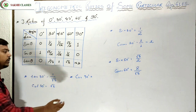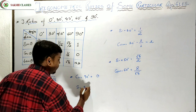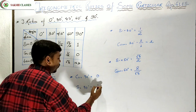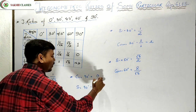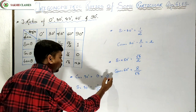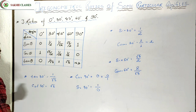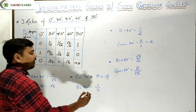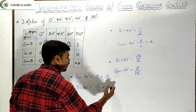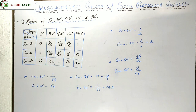For cosec 0°, sin 0° is 0, so cosec 0° would be 1/0. Since we cannot divide by zero, 1/0 is not defined. So cosec 0° is not defined. Similarly, wherever the denominator becomes zero, the value is not defined.